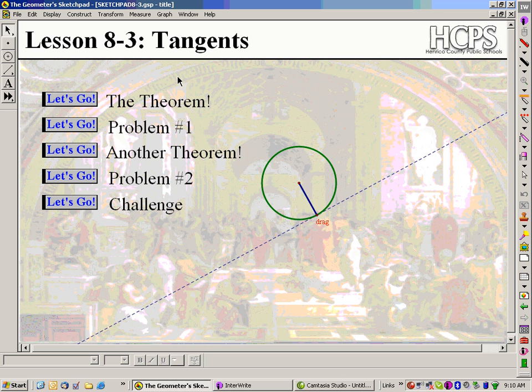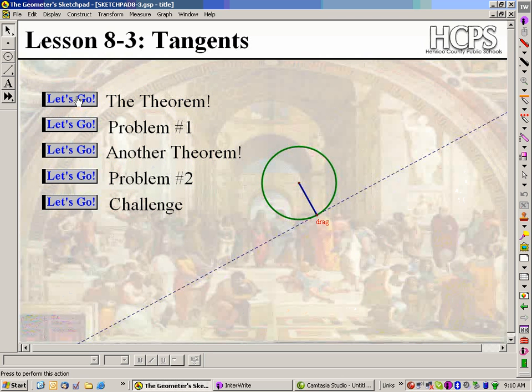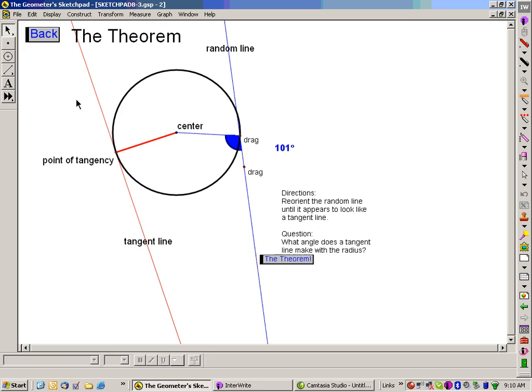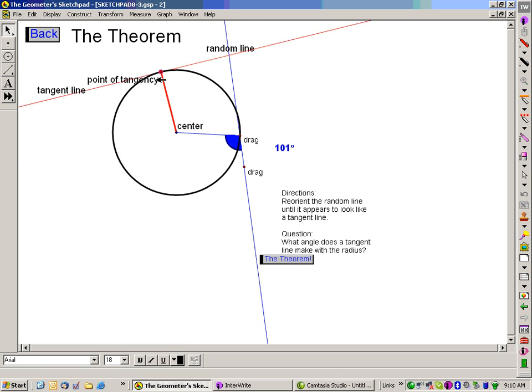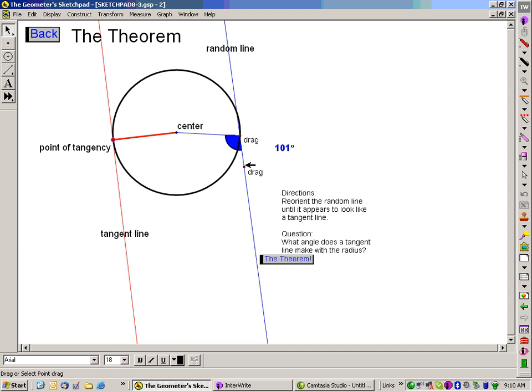Using the Sketchpad file for this lesson, let's look at the first theorem. Here we see a tangent line to a circle, and here we see a random line that's attached to a circle. So the idea is, what is the theorem?